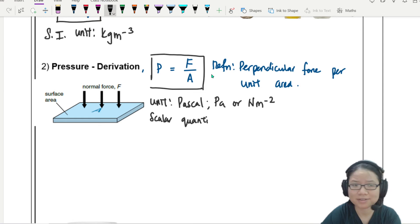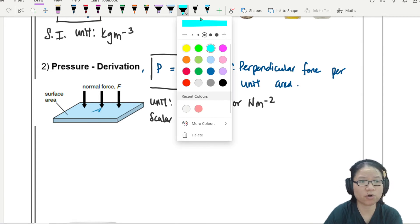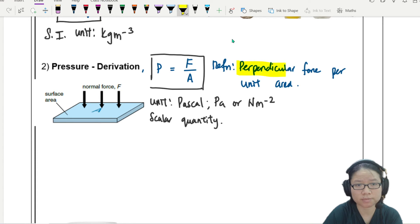Pressure, no direction one, right? The force got direction. Pressure don't have. Another thing about this idea is that this force is perpendicular. So when we come to perpendicular forces, in this case, obviously, this force and this area is 90 degree. So no problem.